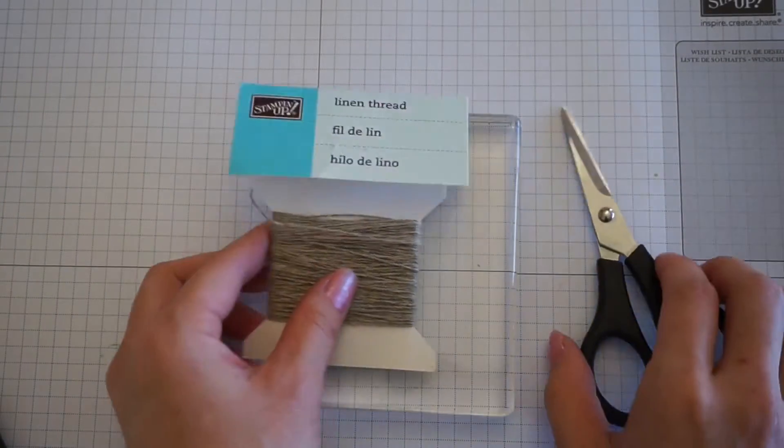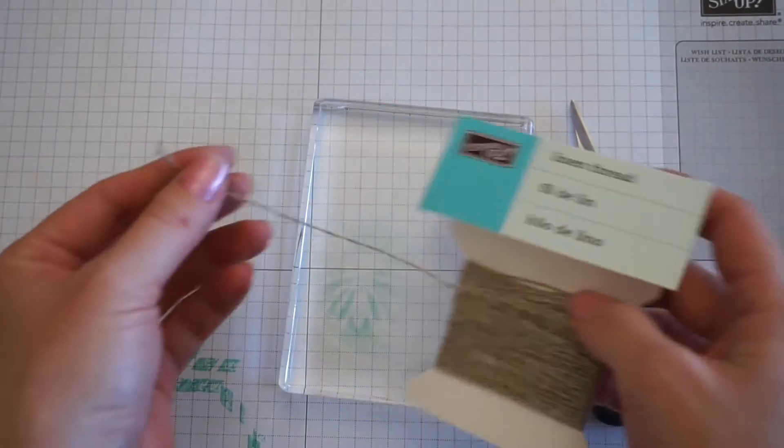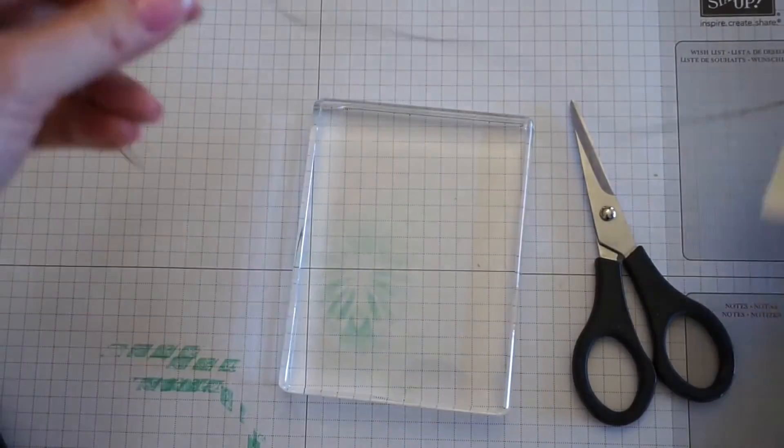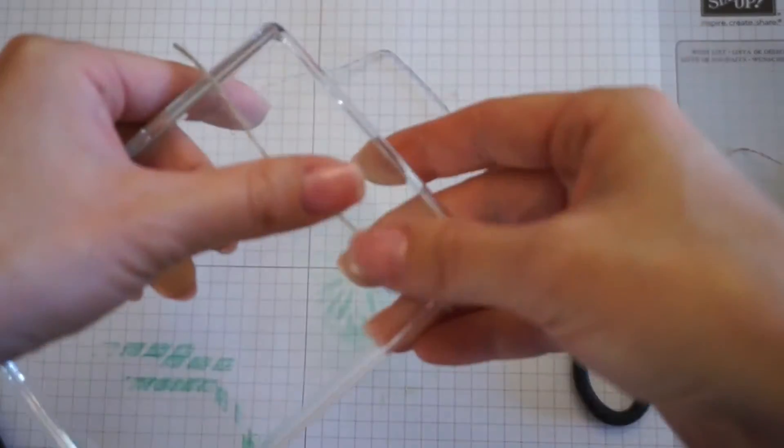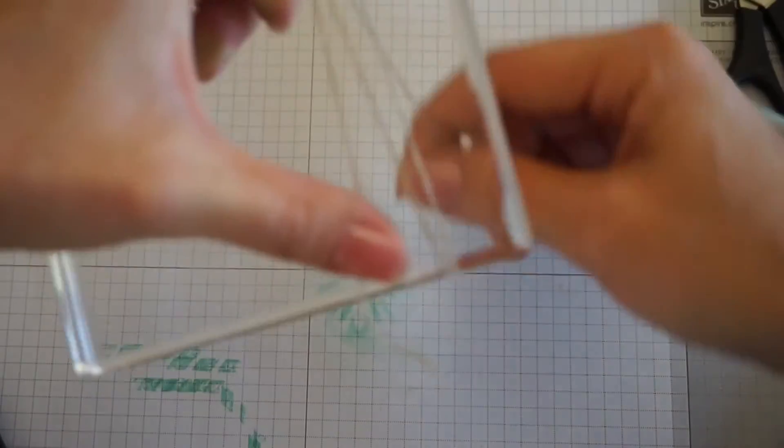Next I made a little bundle of linen thread and I found it easy to use a block. Just use one of, this is block E. You wrap it around three times.